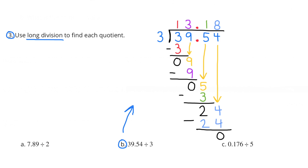I bring down the 5 in the tenths place. 3 goes into 5 once, so I put the 1 in the tenths place. 1 times 3 is 3, and the difference is 2. I bring down the 4 in the hundredths place. 3 goes into 24 eight times. 8 times 3 is 24, and the difference is 0. So 39 and 54 hundredths divided by 3 is 13 and 18 hundredths.